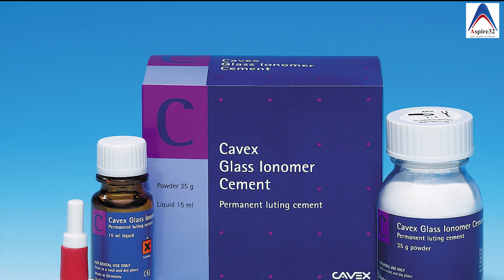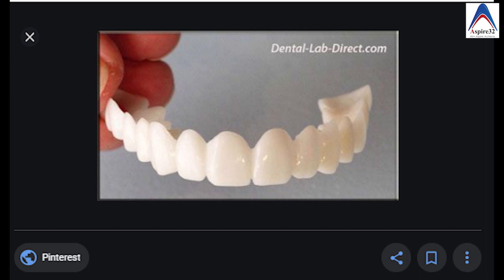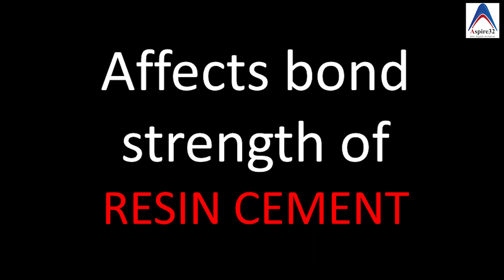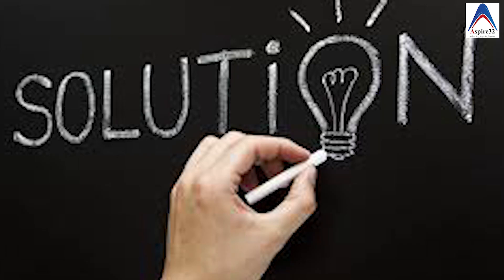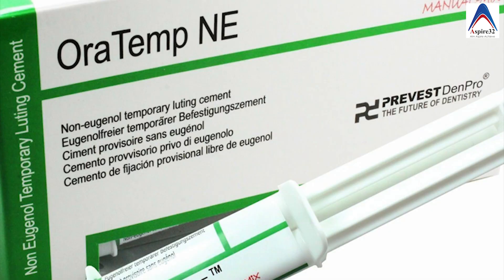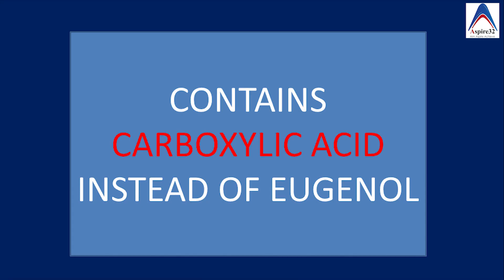The same concern applies to veneer cementation. If zinc oxide eugenol cement is used as a temporary before permanent veneer cementation, the resin cement used for permanent cementation will have lesser bond strength, which can be damaging for the long-term health of the restoration. The solution is non-eugenol containing zinc oxide cement, which is now available in the market and is beneficial whenever resin bonding material is involved.